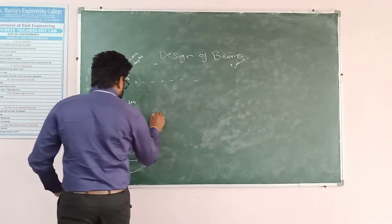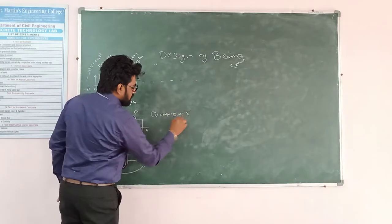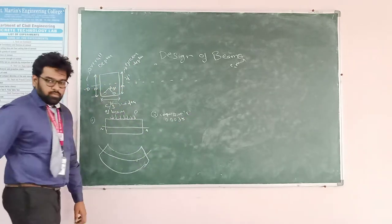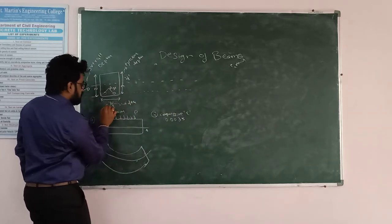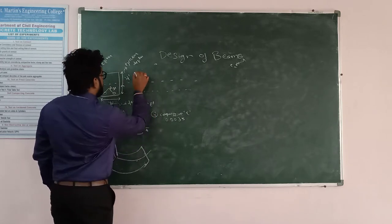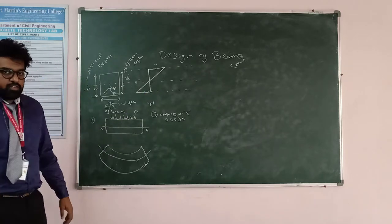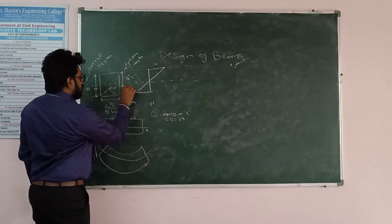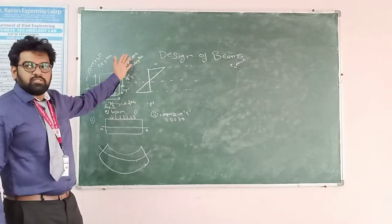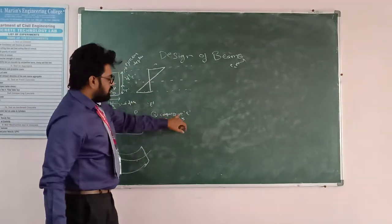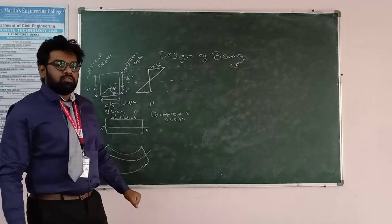The second assumption: the compression strain in concrete is assumed as 0.0035. Looking at the cross-section and strain diagram, the upper part is the compression side and the lower part is the tension side — above the neutral axis is compression and below is tension. The maximum strain in compression at the topmost fiber is assumed to be 0.0035.